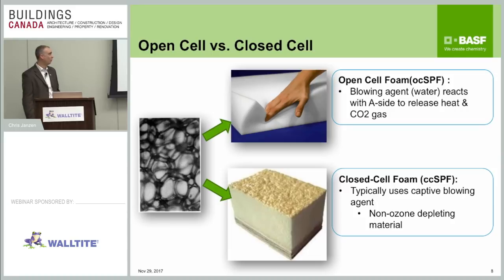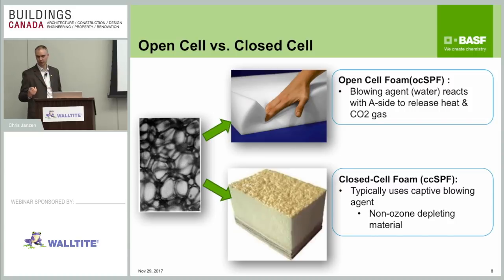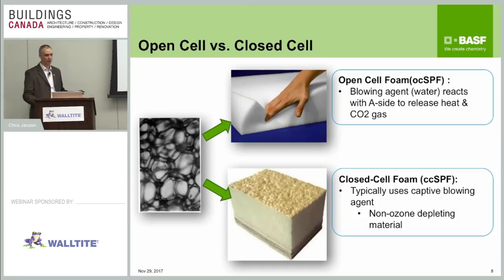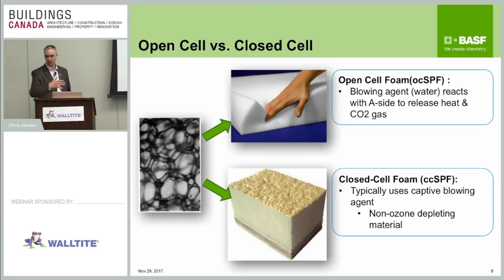There are two main types of foam: open cell and closed cell. Open cell spray foams are your half-pound density foams — they use water as a blowing agent, water reacts with the isocyanate to produce carbon dioxide, and the foam expands about 100-to-1. Because it's open cell, it's air permeable, air and moisture can move through it, and it has a lower R-value. With closed cell spray foam, they use a captive blowing agent. The whole industry has moved away from ozone-depleting agents — CFCs were phased out in the mid-90s, HCFCs were phased out in 2010, and the industry is moving to HFO technology, which has lower greenhouse warming potential, with a phase-out expected by 2021.